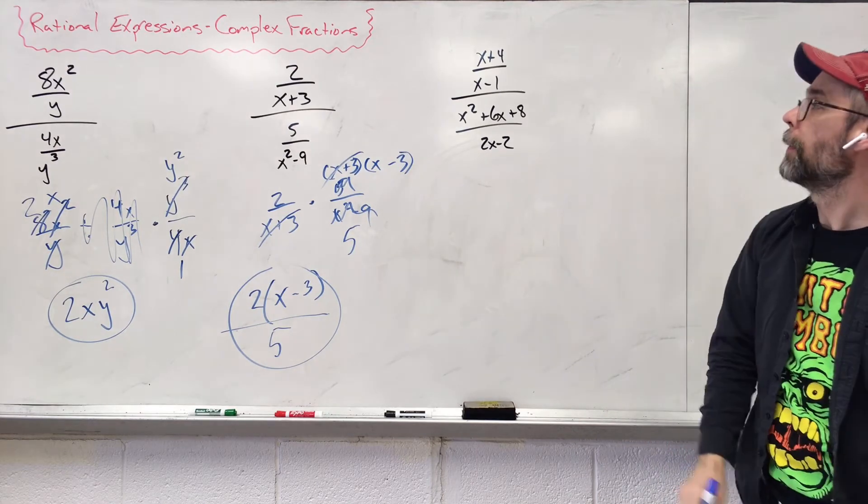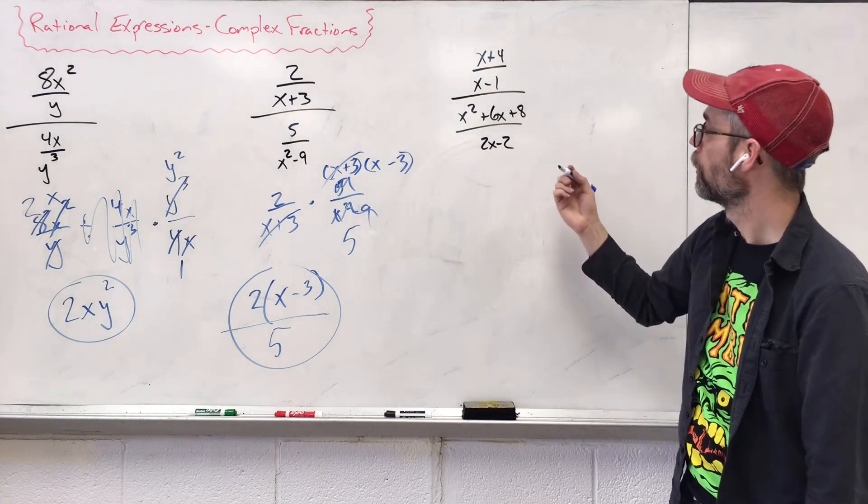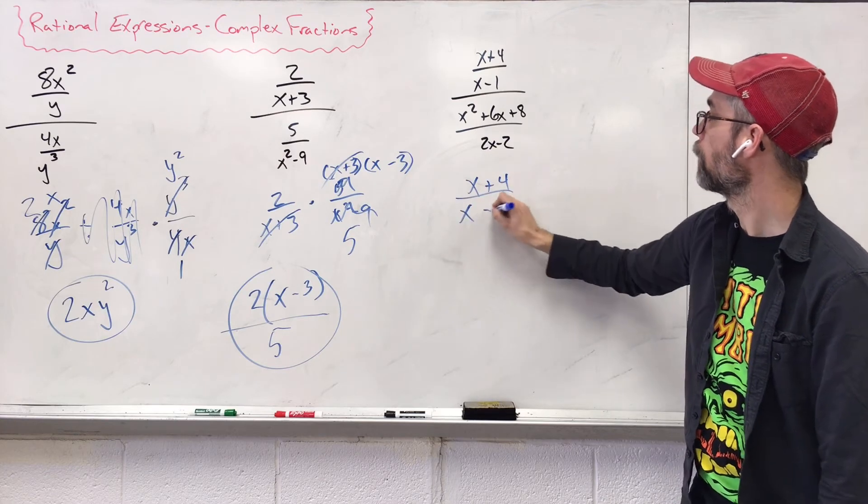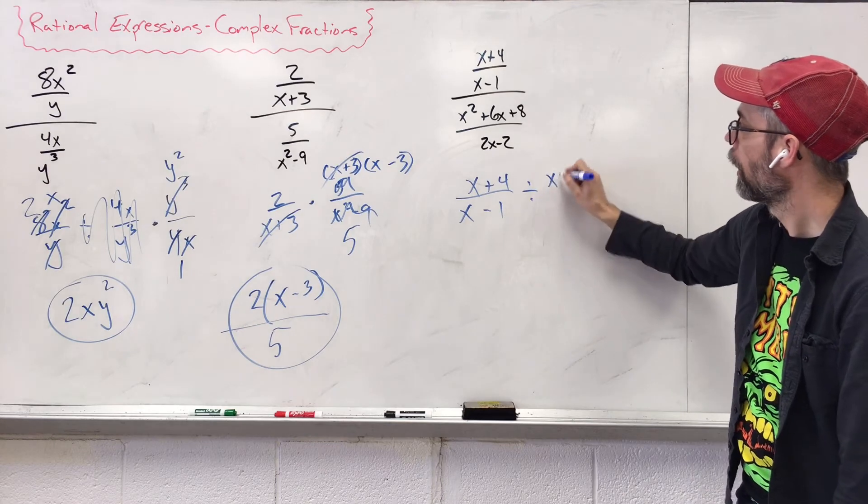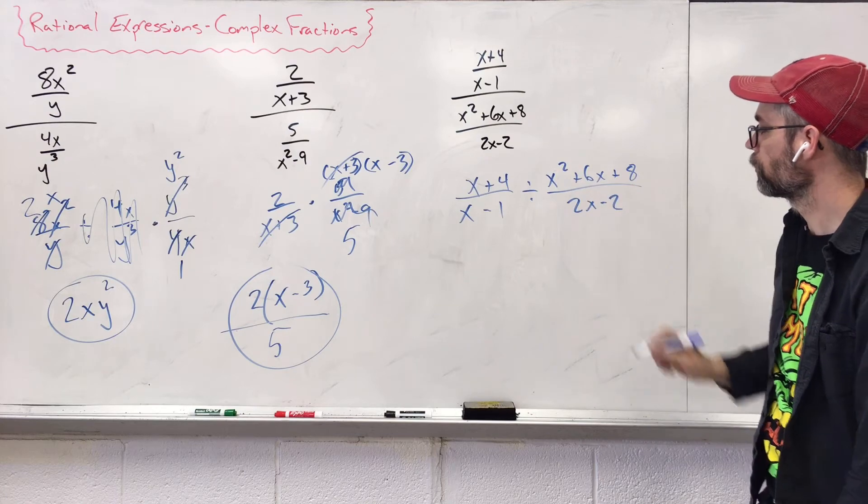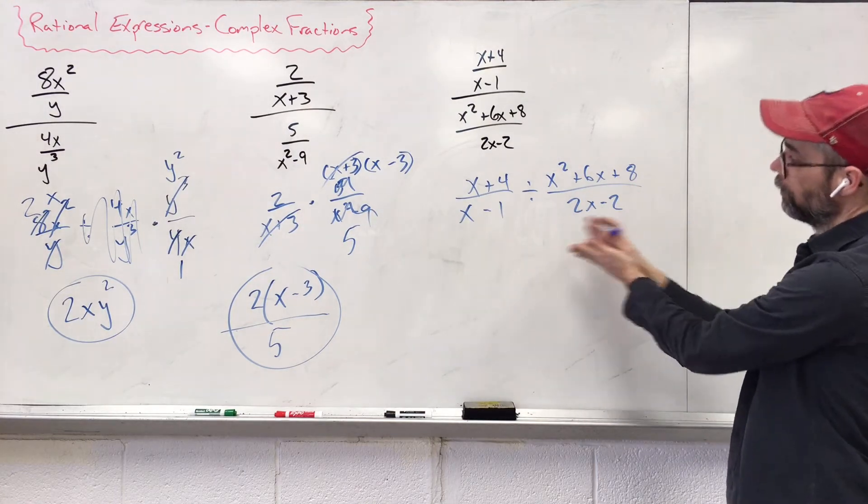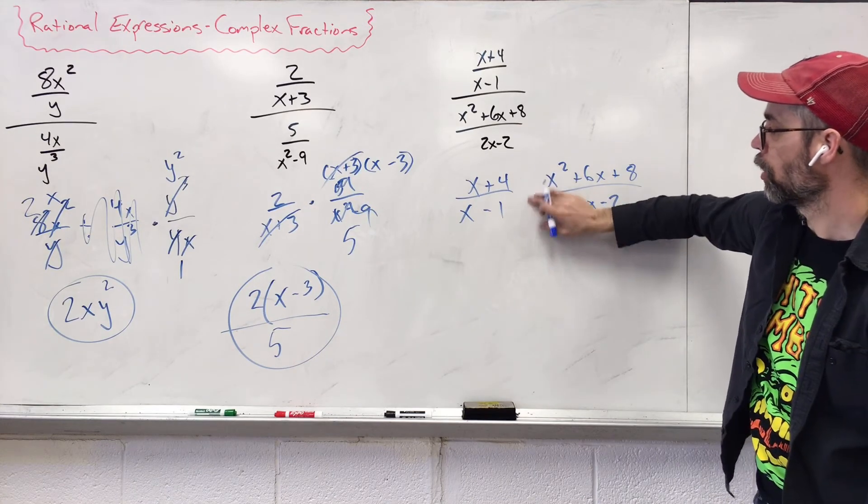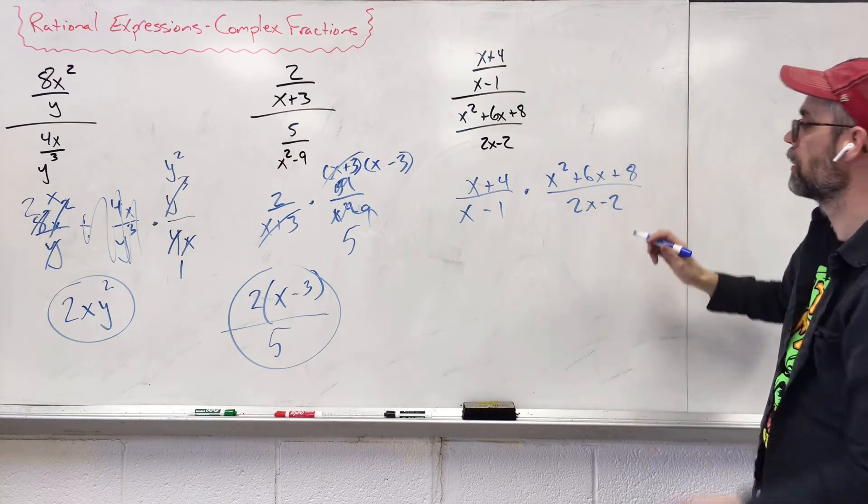Again, let's rewrite. Because I don't like fraction, fraction into a big fraction. We say x plus four over x minus one divided by x squared plus 6x plus eight over 2x minus two. Now I have a form that's a little easier to read. We do not like division, so we're going to multiply by its reciprocal. I'm going to factor and switch these.